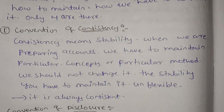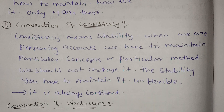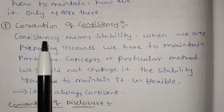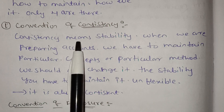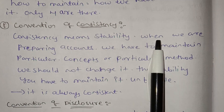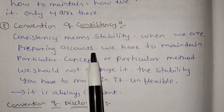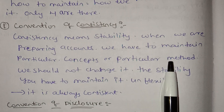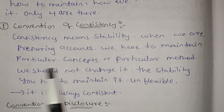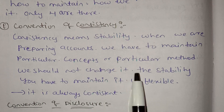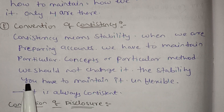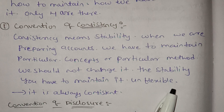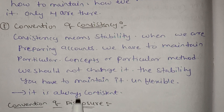Accounting Conventions is mentioned — Stable and Consistent. Consistency means stability. When we are preparing accounts, we have to maintain particular concepts or particular methods. We should not change it. The stability — you have to maintain it. It is unflexible; it is always consistent.